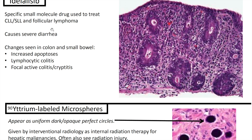Next up we have idelalisib, a specific small molecule drug used to treat CLL or SLL and follicular lymphoma. It can cause severe diarrhea. Changes seen in the colon and small bowel include — consistent with the trend we're seeing — increased apoptoses, lymphocytic colitis, and focal active colitis or cryptitis.